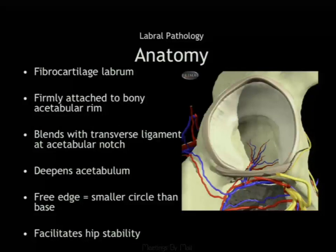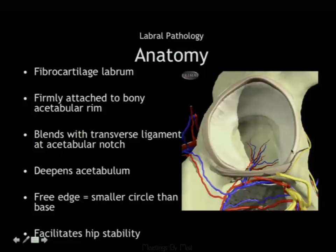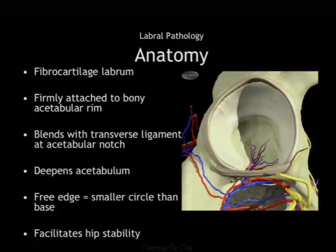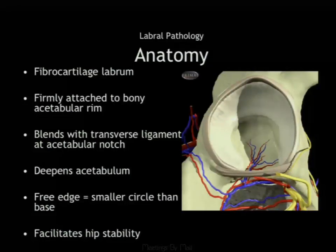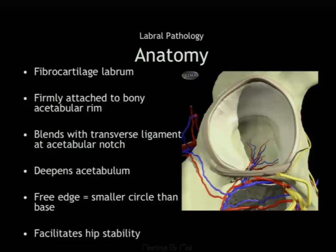The labrum is fibrocartilage firmly attached to the acetabular rim, blending with the transverse ligament at the inferior acetabular notch. This deepens the acetabulum. The labrum acts as a gasket more than a cushioning device—it functions to keep joint fluid within the joint and protect the articular cartilage, rather than as a cushion like the meniscus.